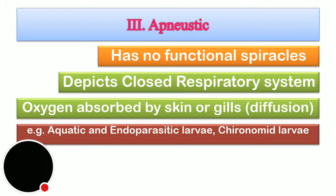Apneustic respiration occurs in aquatic and endoparasitic larvae. Aquatic larvae present in water may have gills or utilize diffusion to obtain oxygen. Endoparasitic larvae, which are inside the body of a host — as seen in biological control agents — sustain themselves by respiring through diffusion in this manner.